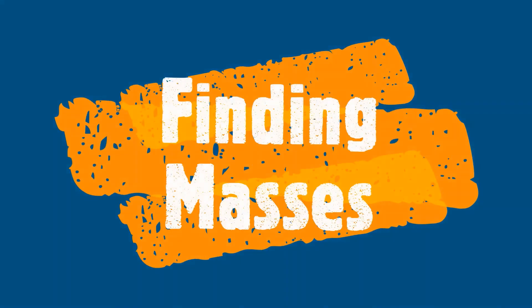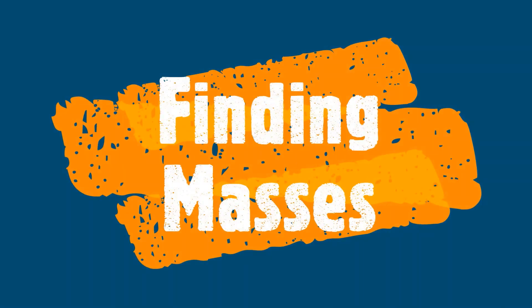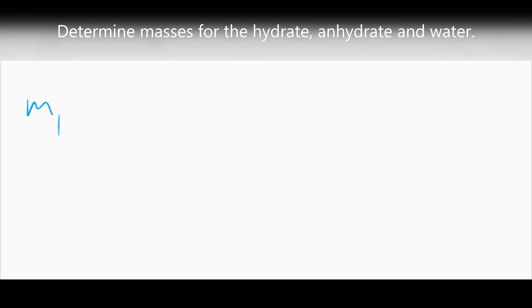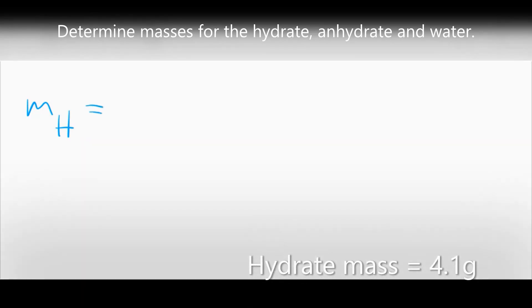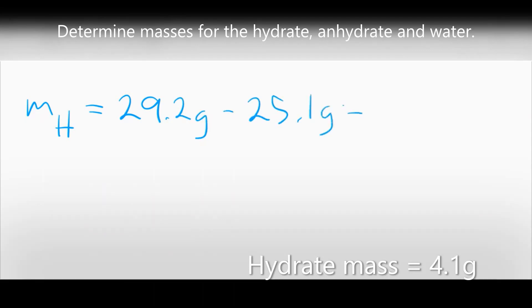Let's calculate some masses. The mass of the hydrate was determined to be 4.1 grams by finding the difference between the original sample in the evaporating dish, 29.2 grams, and the mass of the